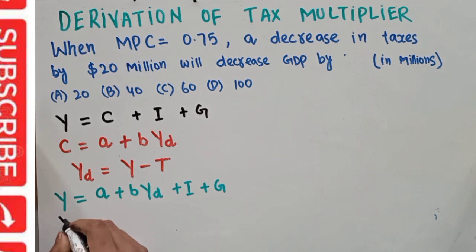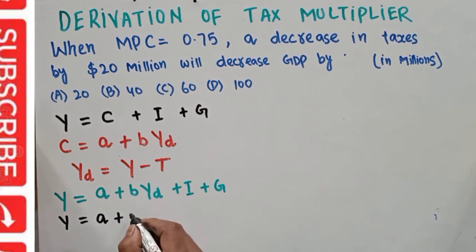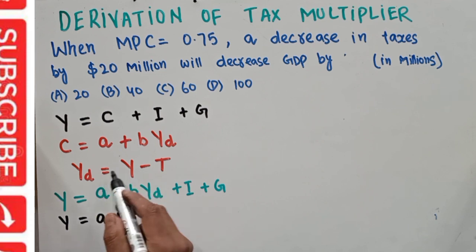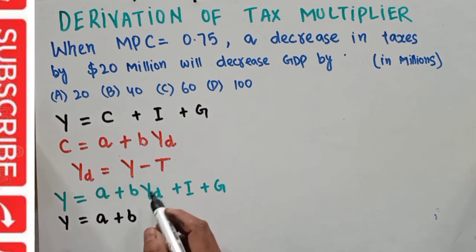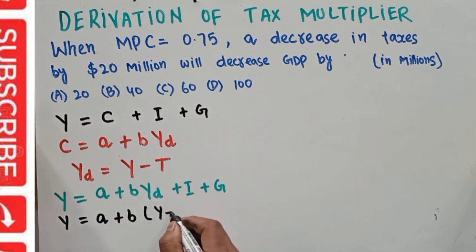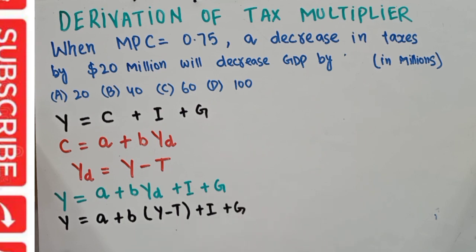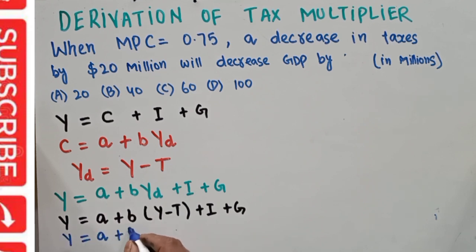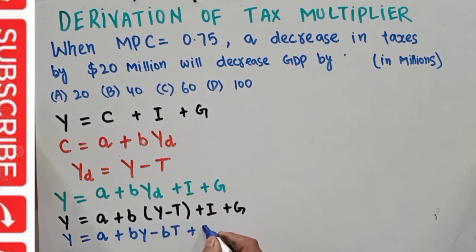Solving further, Y equals a plus b times disposable income. Since disposable income Y_d = Y − T, we substitute to get: Y = a + b(Y − T) + I + G. Expanding, this becomes Y = a + bY − bT + I + G.